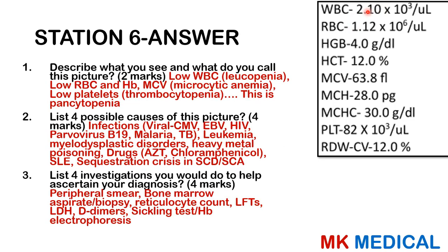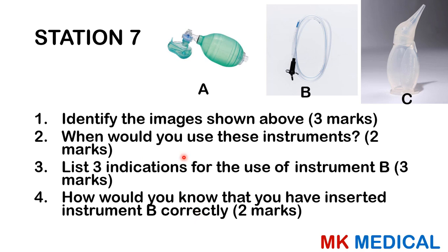The white blood cell count is 2.1 — leukopenia. RBC is 1.12 — low. Hemoglobin is also low, with a low MCV indicating microcytic anemia. Platelets are 82 — thrombocytopenia. This overall picture is pancytopenia. Causes include viral infections such as CMV, EBV, HIV, parvovirus B19, malaria, and TB; leukemias, myelodysplastic disorders, heavy metal poisoning, drugs such as zidovudine and chloramphenicol causing myelosuppression; SLE; and sequestration crisis in sickle cell disease. Investigations include peripheral smear, bone marrow aspirate or biopsy, reticulocyte count, liver function tests, LDH, sickling test, and hemoglobin electrophoresis.